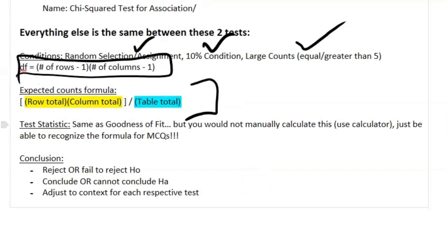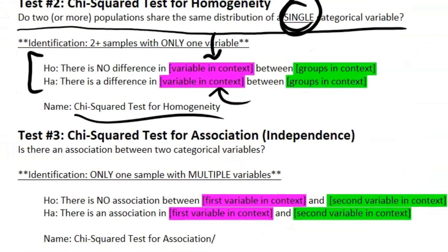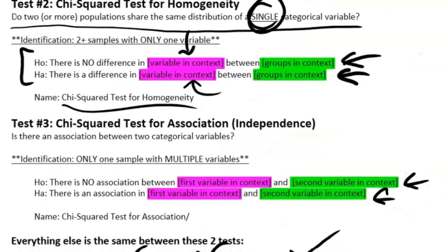But just in case, just recognize it for those multiple choice questions. And then for your conclusion: reject or fail to reject H₀, just like before; conclude or cannot conclude Hₐ. And then just adjust the context based on each respective test. So when we're talking about the context part, make sure you are going back to your null and your alternative hypothesis.